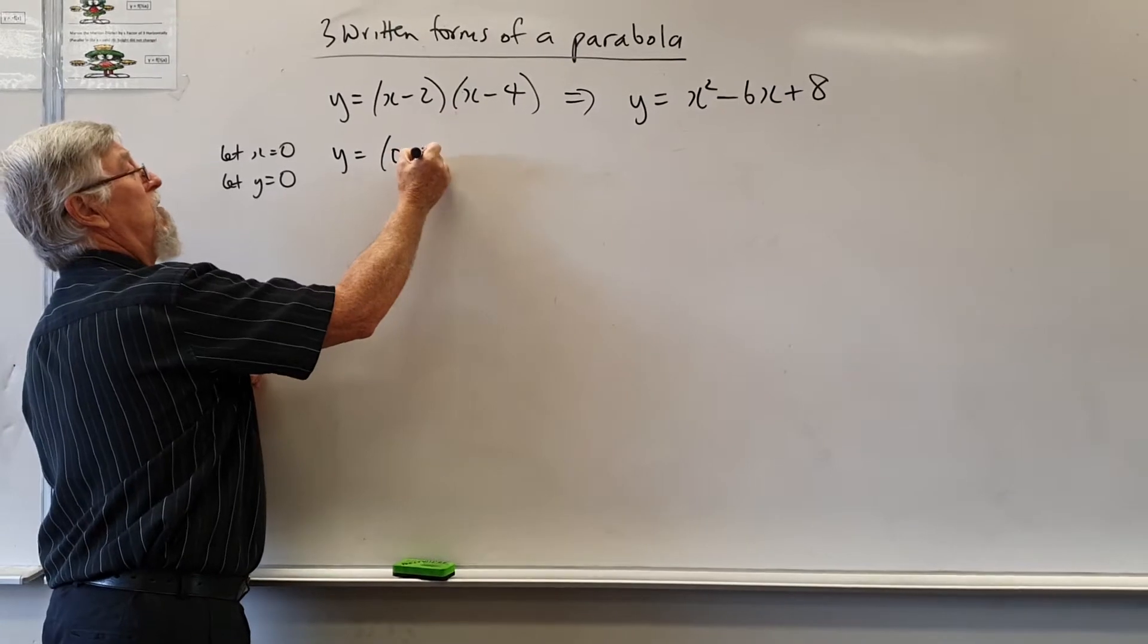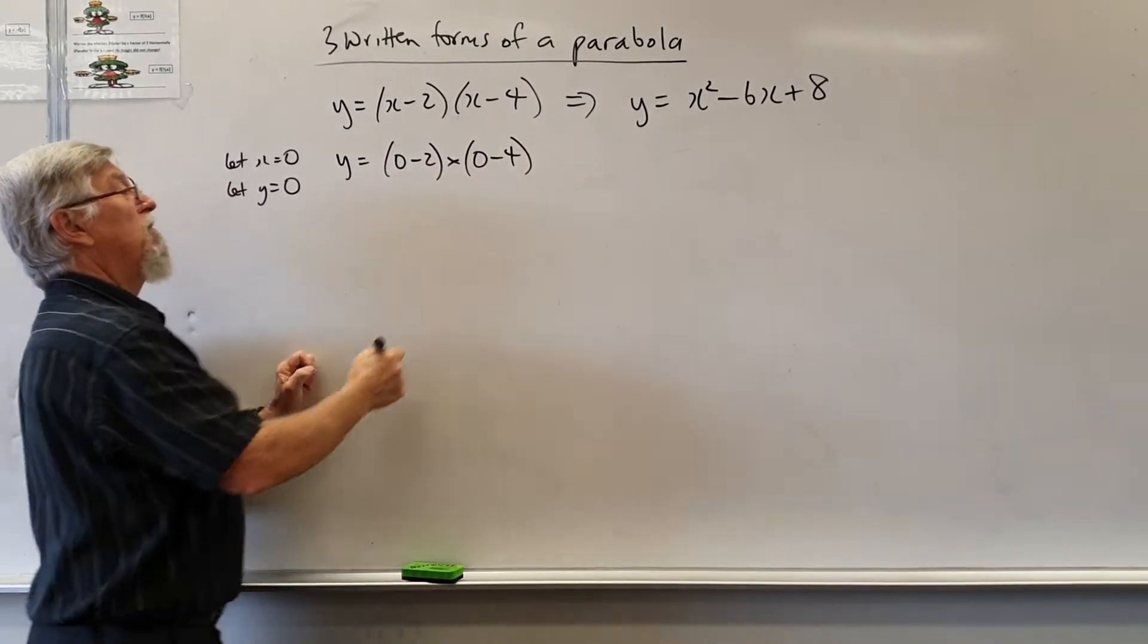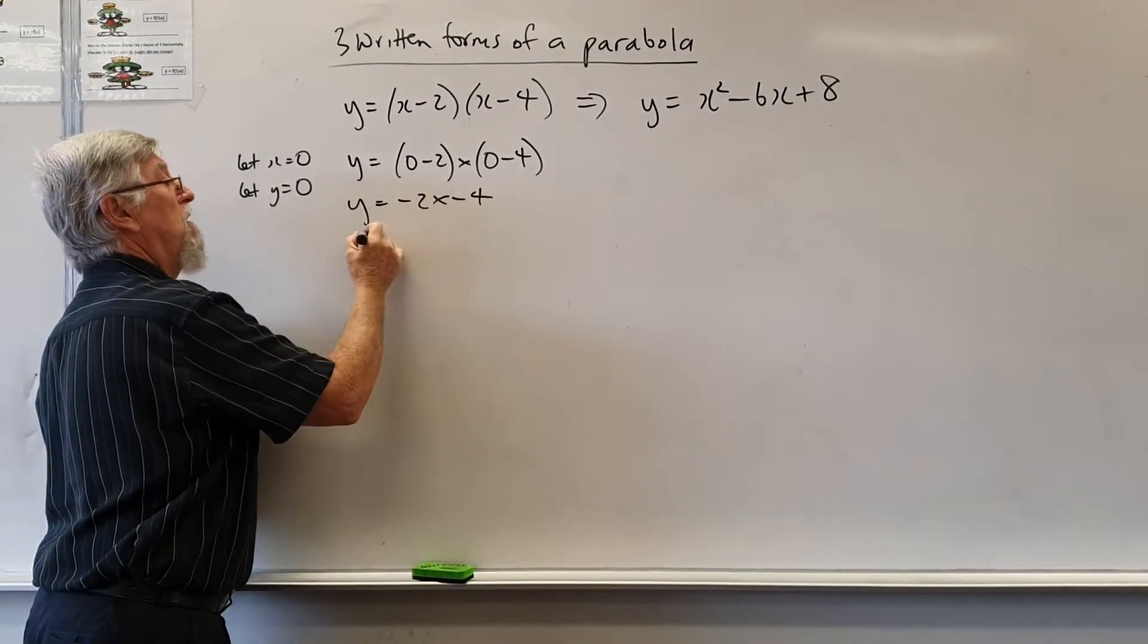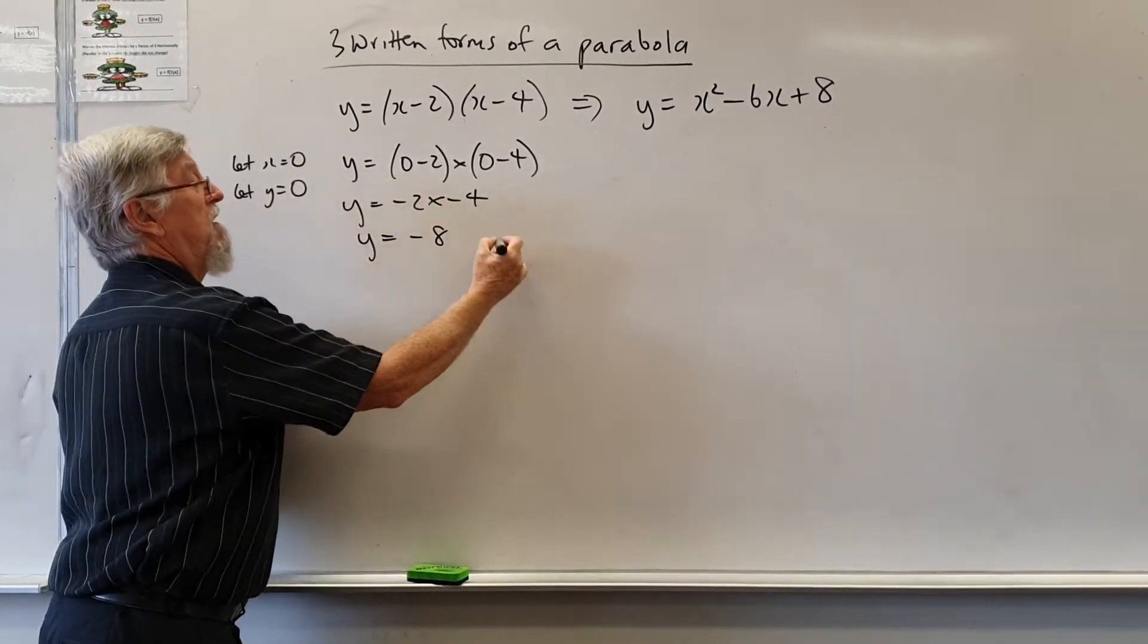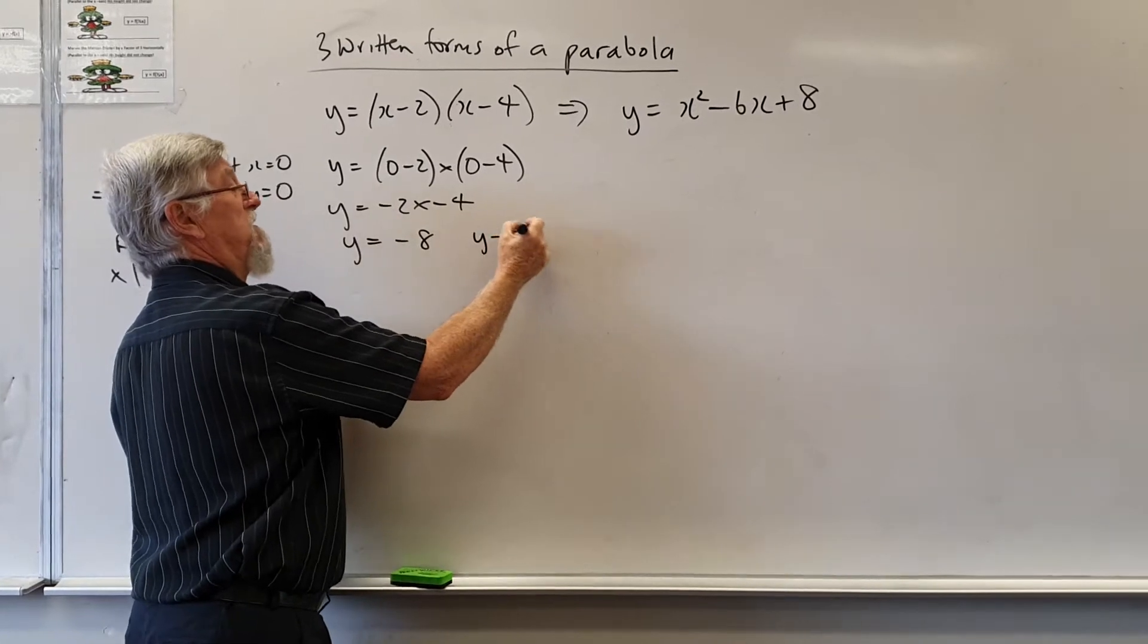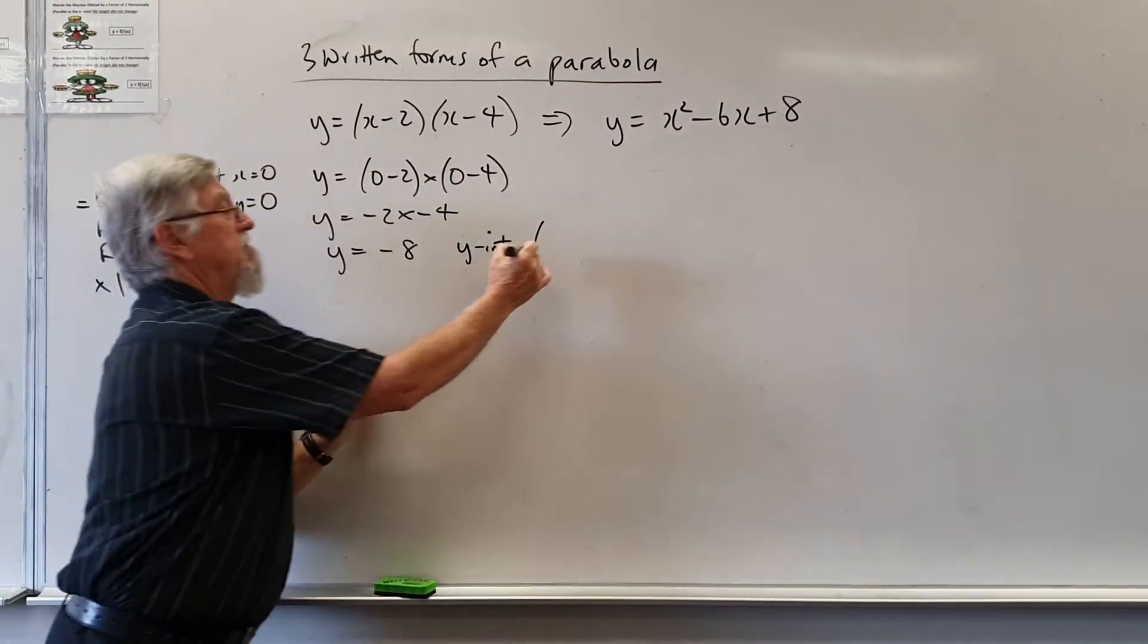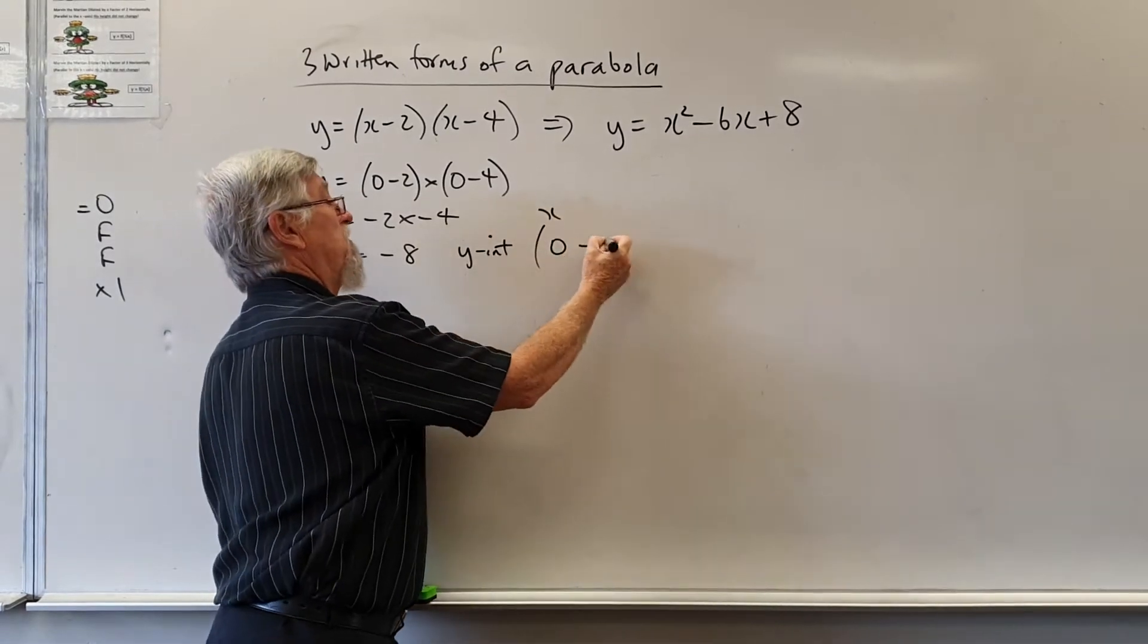So I'd have 0 minus 2 times 0 minus 4. So what have we got now? Minus 2 times minus 4 which is plus 8. So the y intercept is that. What did we put in? We put in the 0 for x and we get 8 for y.